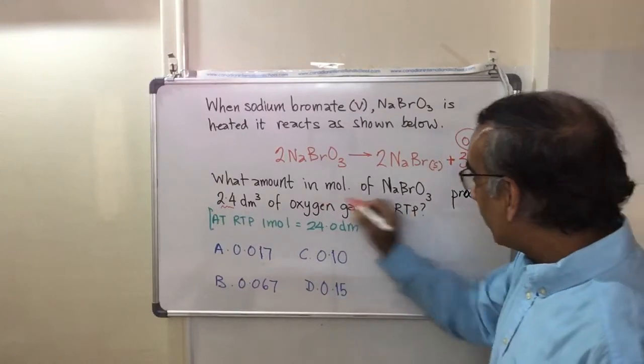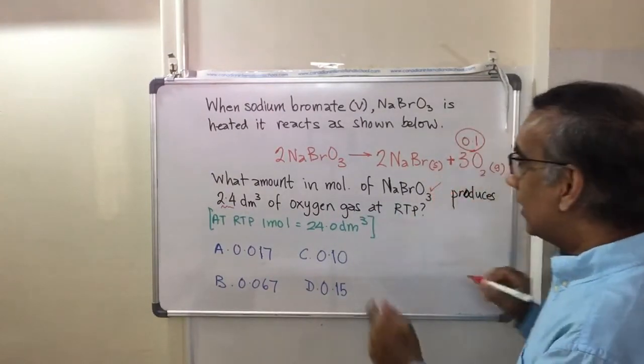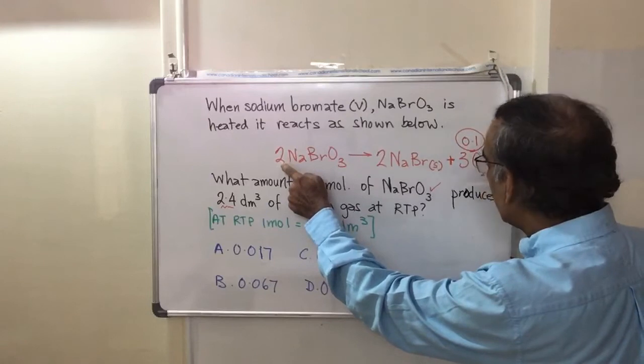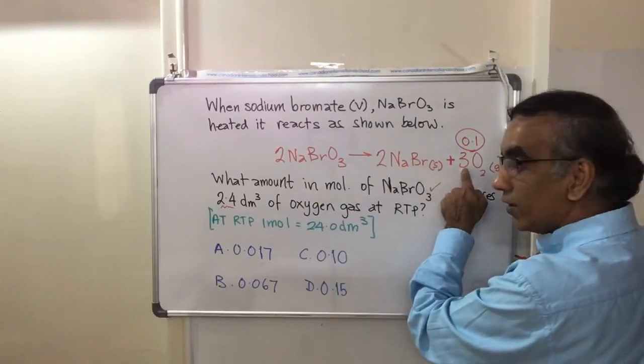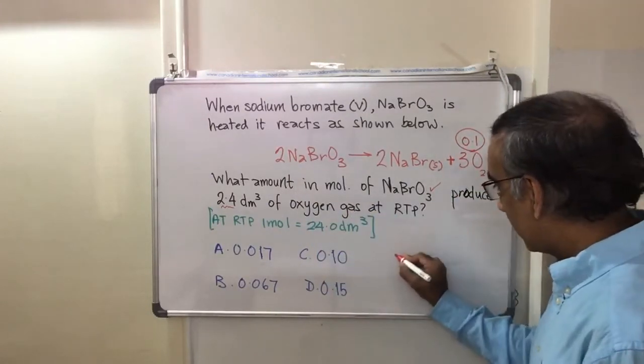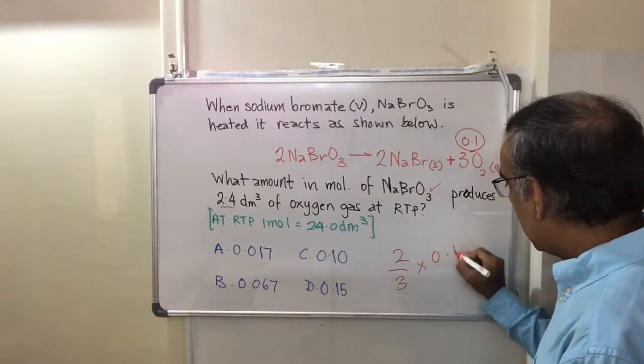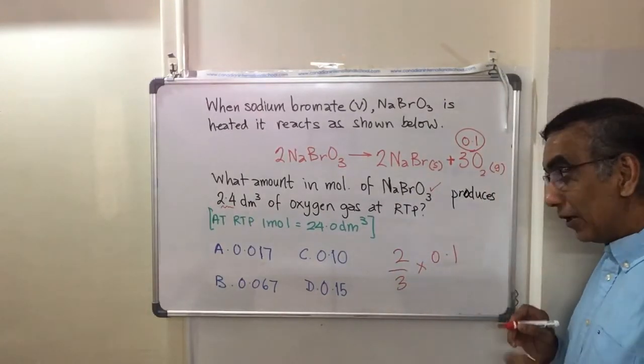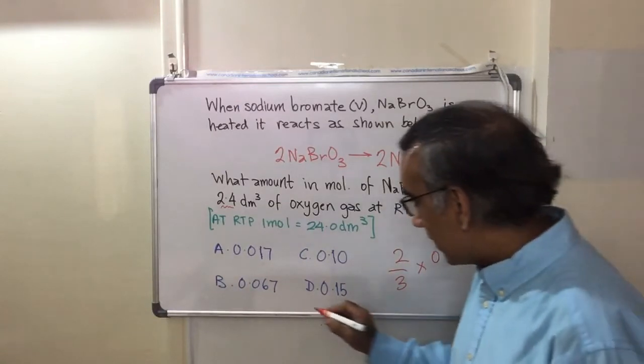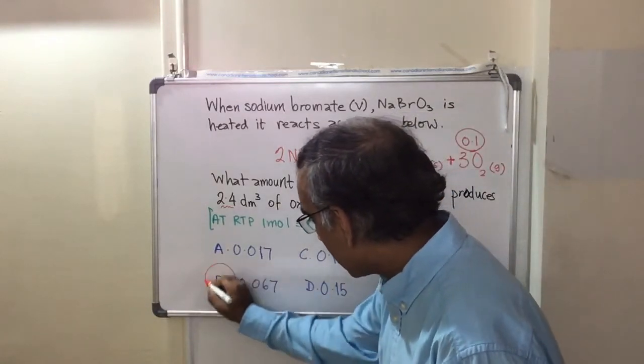With the question asking, what amount in moles of bromate, it means it's going to be two-thirds of 0.1. And doing that in your head, you should realize that it is 0.67.